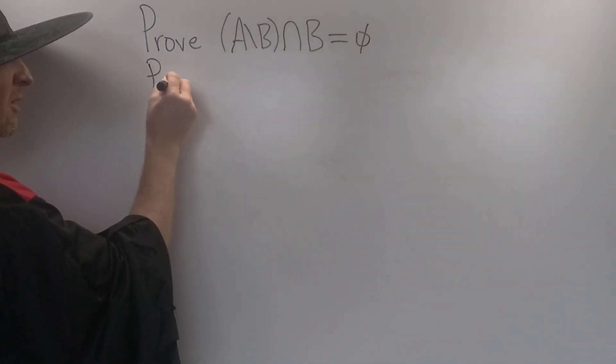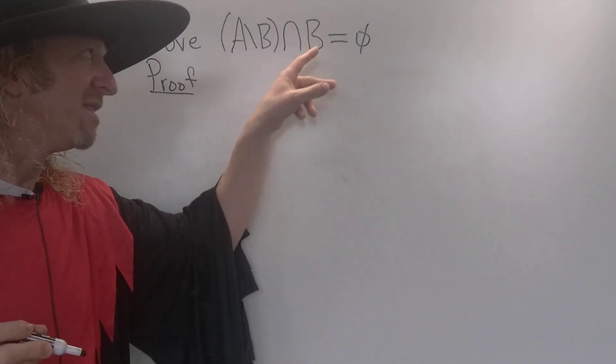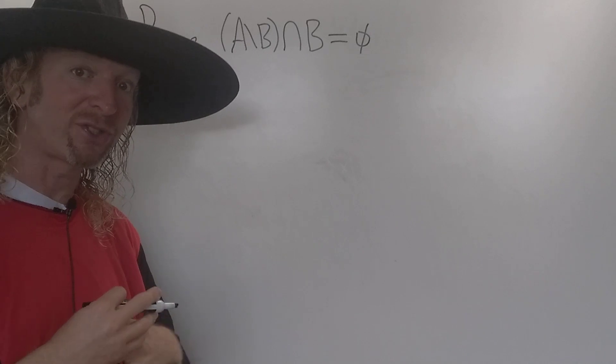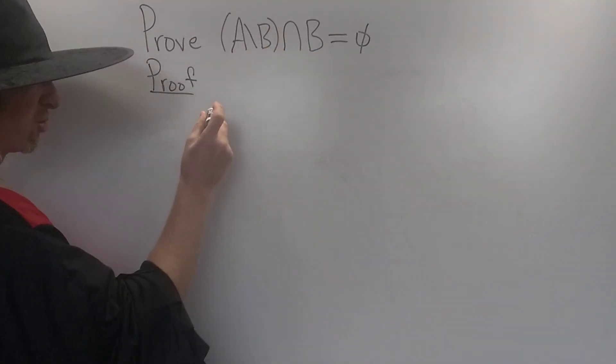So proof. We have to prove that A set minus B intersected with B is equal to the empty set. Let's just do it. Let's write down what this means and show it's equal to the empty set.